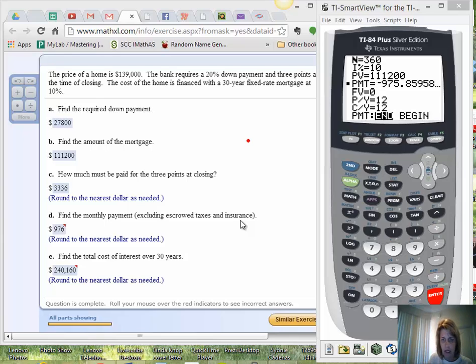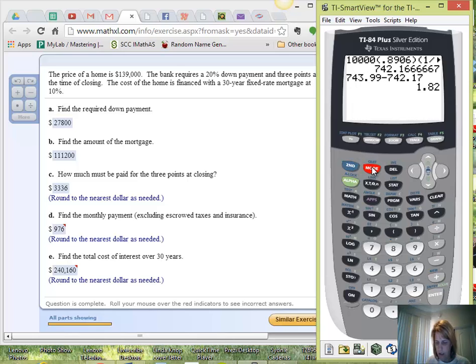Basically what we want to do is take our payment of $976 and multiply that by the number of payments, which is 360. So if I do that, I'm going to put that in my calculator here. If I hit second and quit, and I do my $976 payment times the 360,